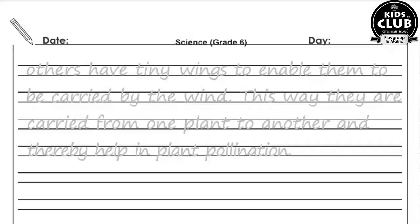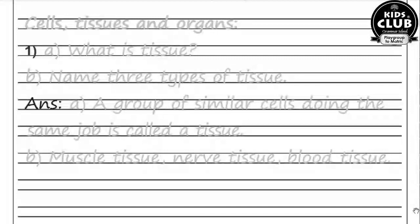Draw the diagrams of red blood cells and epithelial cells from the science book. Cells, Tissues and Organs — Question number one: What is tissue? Name three types of tissues. A group of similar cells doing a similar job is called tissue. For example: muscle tissue, nerve tissue, and blood tissue.